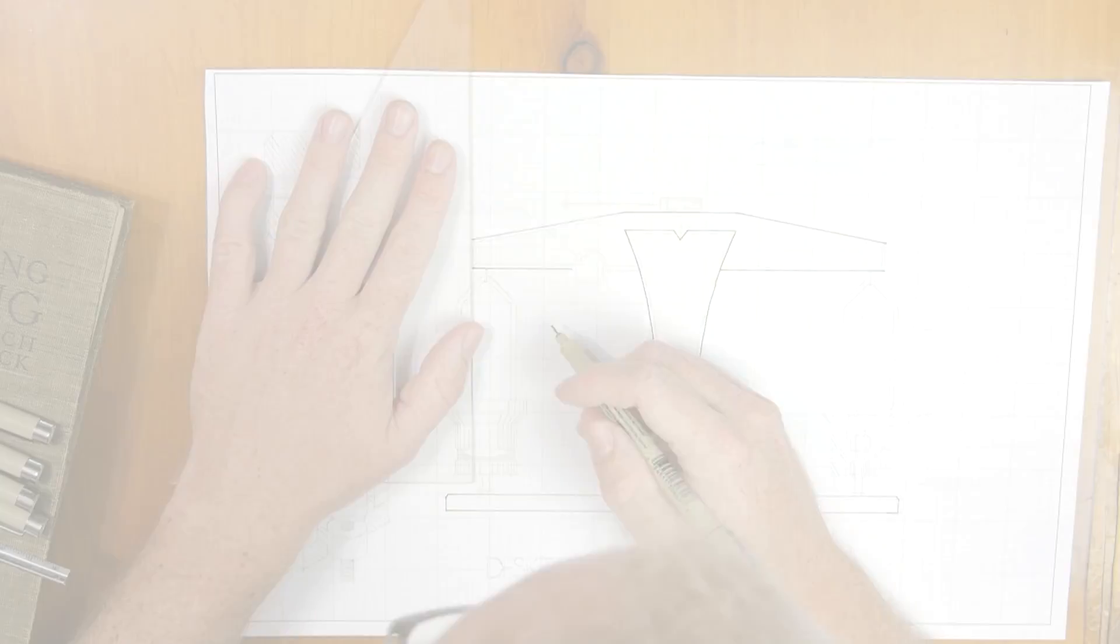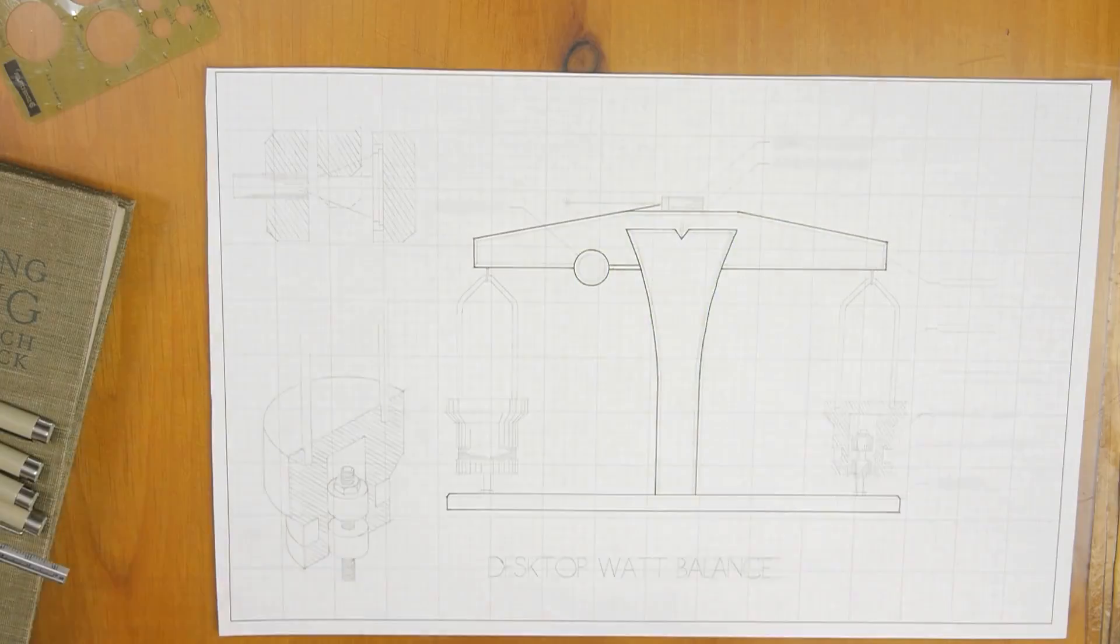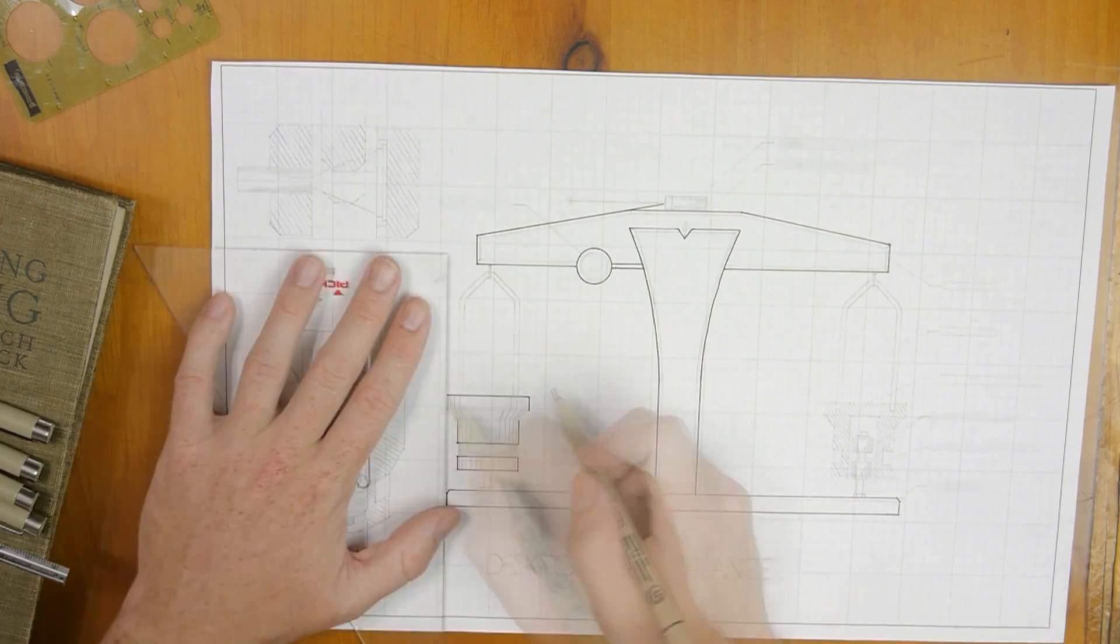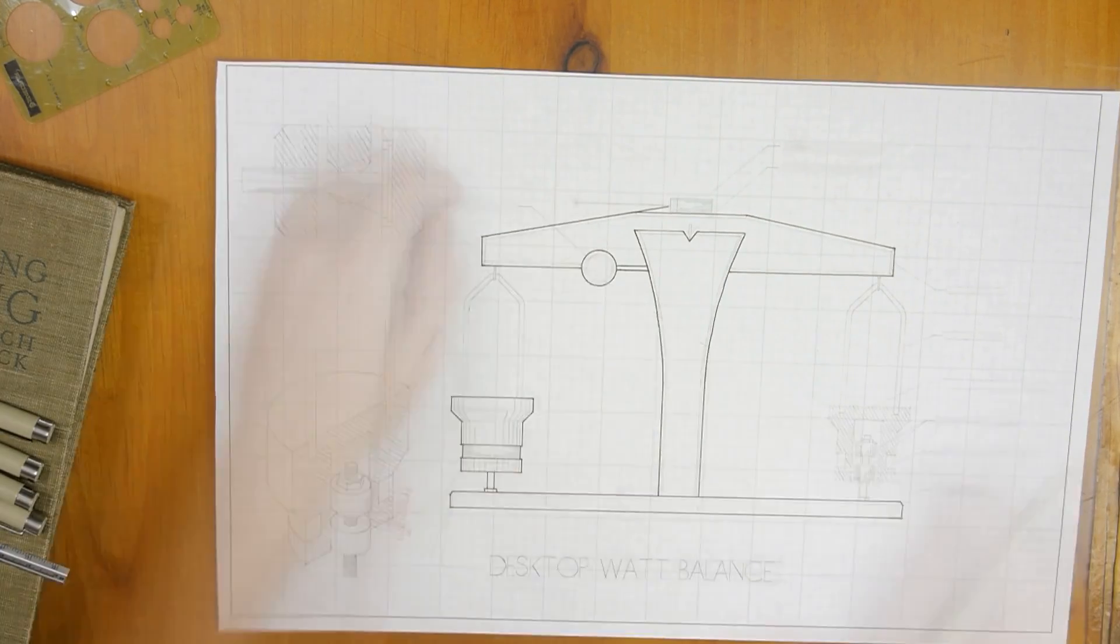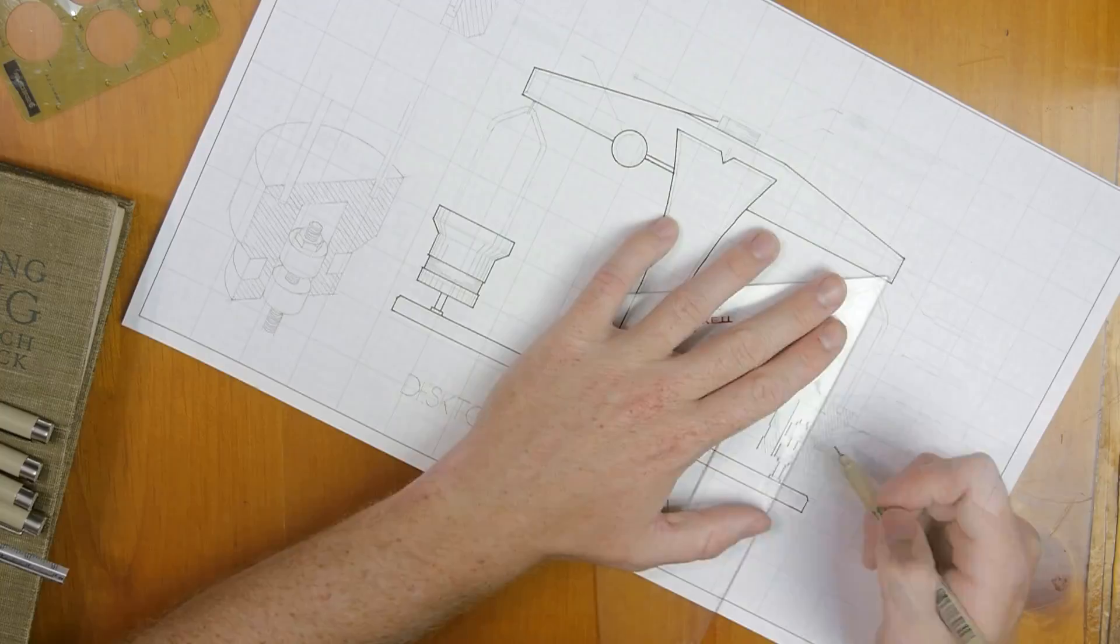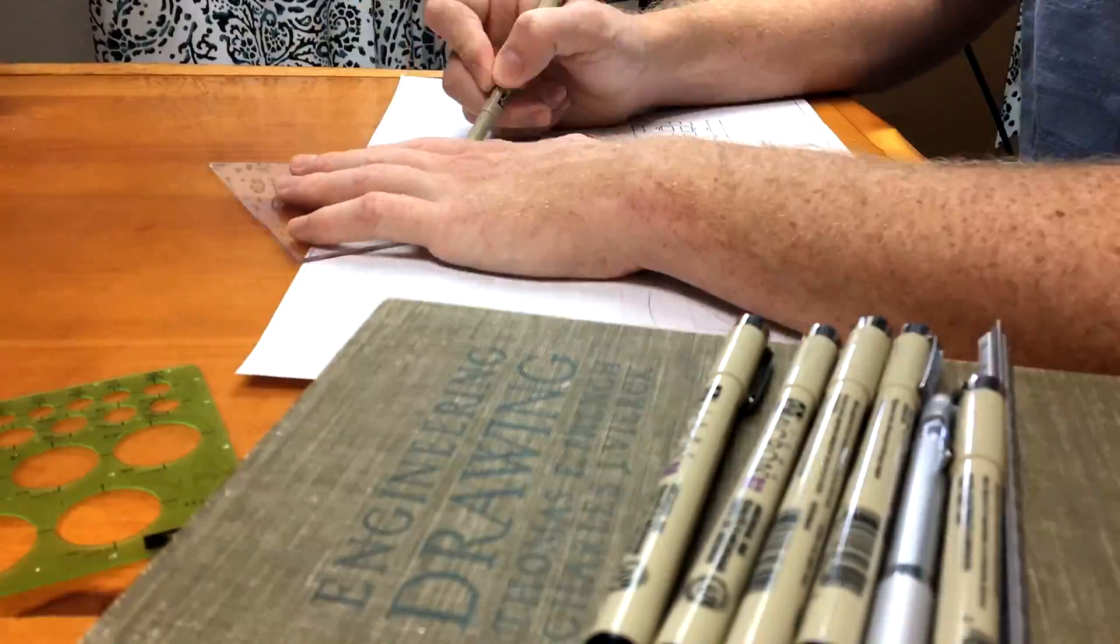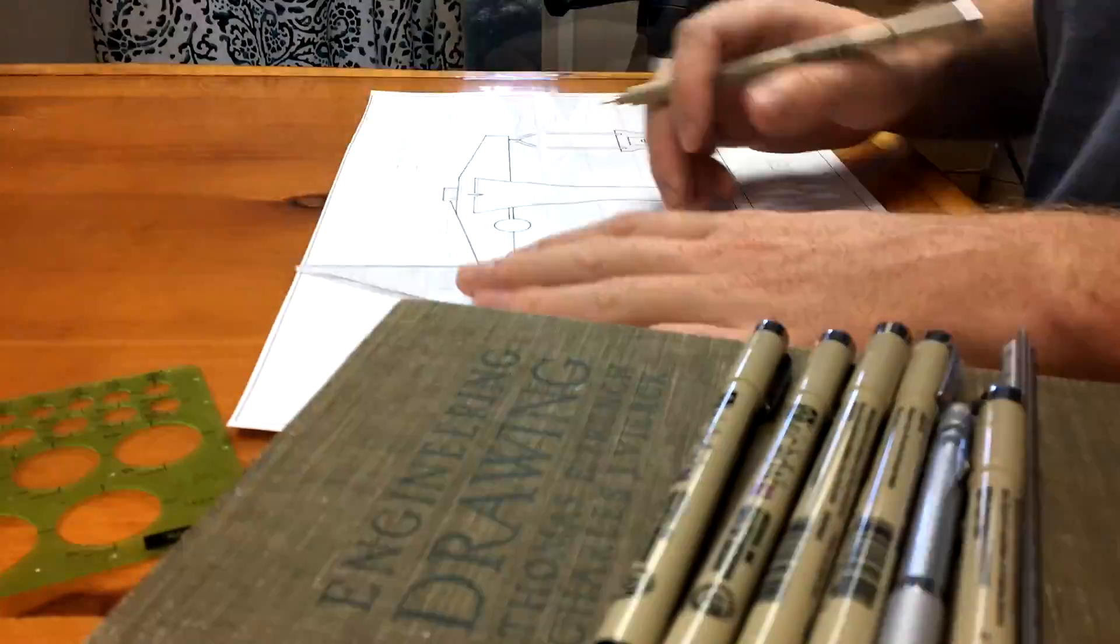A meter is defined as the distance traveled by light in three billionths of a second. A second is defined as the time it takes for about 9 billion cycles of irradiation of the cesium atom. But the definition of the kilogram is a little bit more approachable.